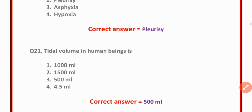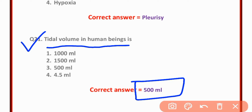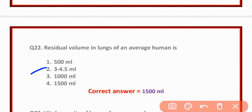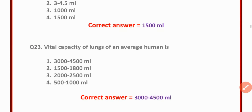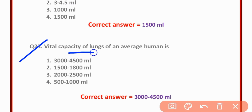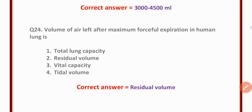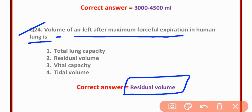MCQ number twenty-one: Tidal volume in human beings is 500 ml — option B is correct. MCQ number twenty-two: Residual volume in lungs of an average human is 1500 ml — option four is correct. MCQ number twenty-three: Vital capacity of lungs of an average human is 3200 to 4500 ml. MCQ number twenty-four: Volume of air left after maximum forceful expiration in human lungs is residual volume — option B is correct.